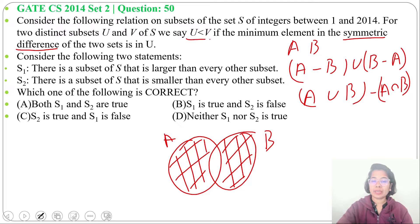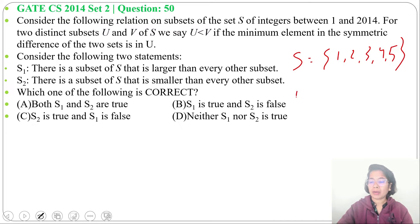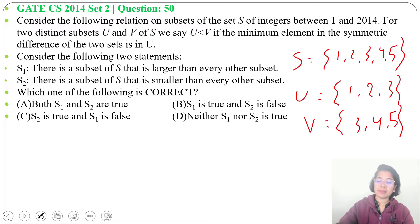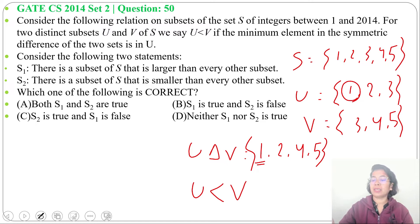The relation says U is less than B if the minimum element in the symmetric difference of the two sets is in U. Let's take a small example. Suppose set S contains {1, 2, 3, 4, 5}. Let U = {1, 2, 3} and B = {3, 4, 5}. The symmetric difference of U and B is {1, 2, 4, 5}. The minimum element is 1, and 1 is in set U. So we say U is less than B.